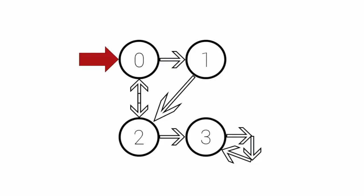Let's imagine this kind of a graph. In this graph we have nodes 0, 1, 2, and 3. From node 0 there is a route to 2 and a route to 1. Then we have a route from 2 to 0 and from 2 to 3. Then there is a route from 1 to 2. All of this can be given by an adjacency matrix which we will see soon.